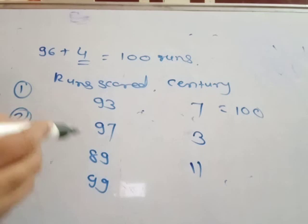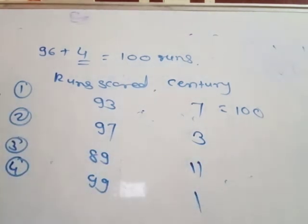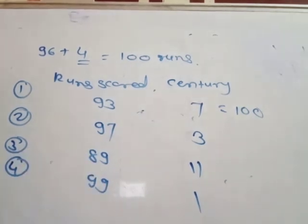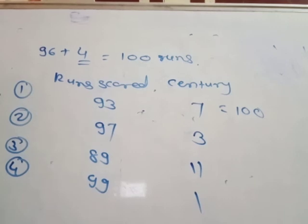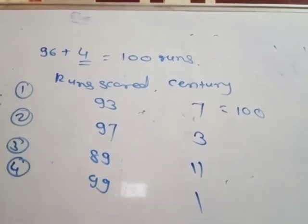Player 4 needed only one run to complete a century. After 99, we go on like this — 99, after which number? 100.